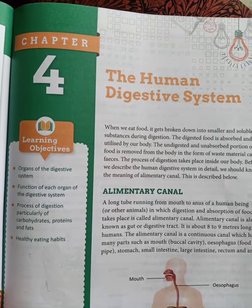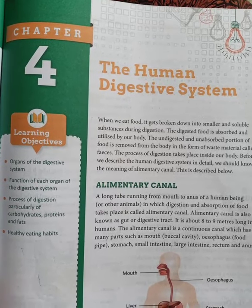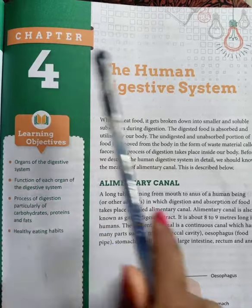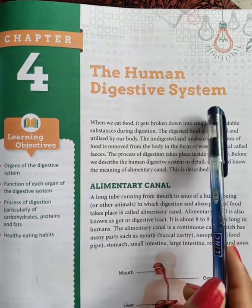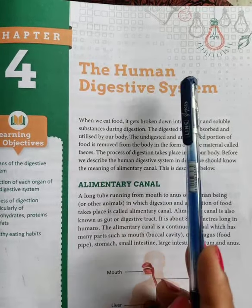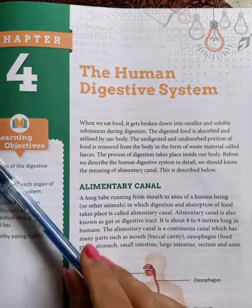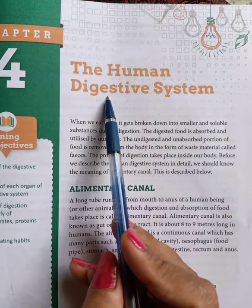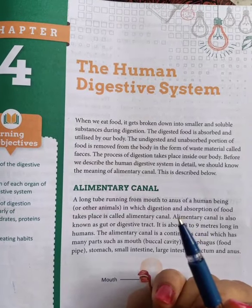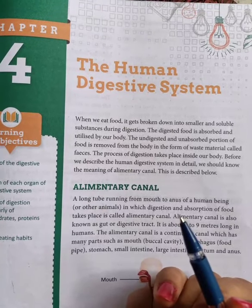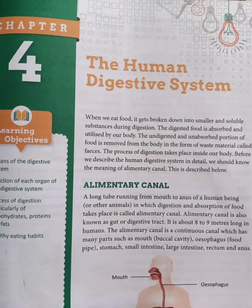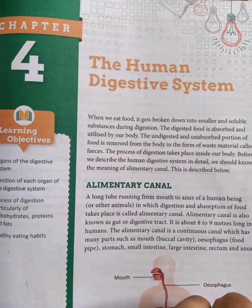Good morning children. We had already completed chapter number 3, The Cell. Today we are going to start chapter number 4 - the first lecture - and the name of the chapter is The Human Digestive System. This is one of the most important and interesting chapters. In this chapter we are going to study the parts of the human digestive system, the main function of each organ, how digestion occurs when we eat different types of nutrients, and what are the good eating habits.